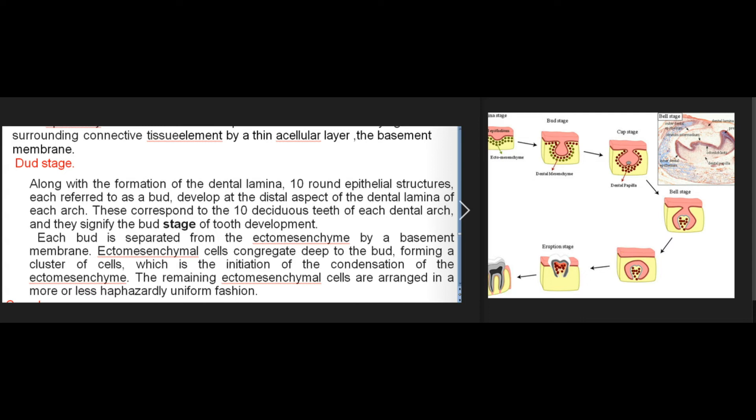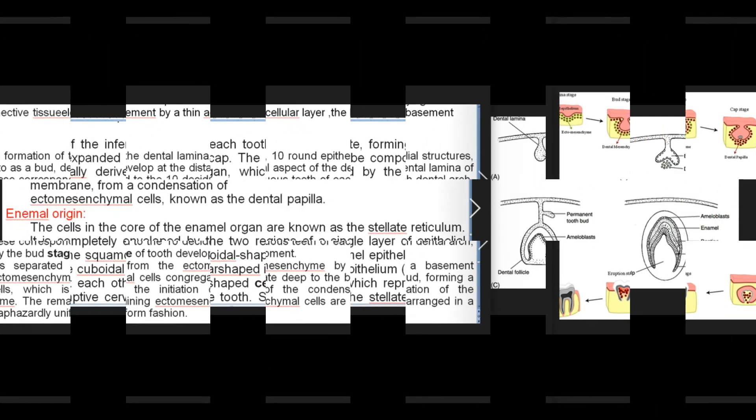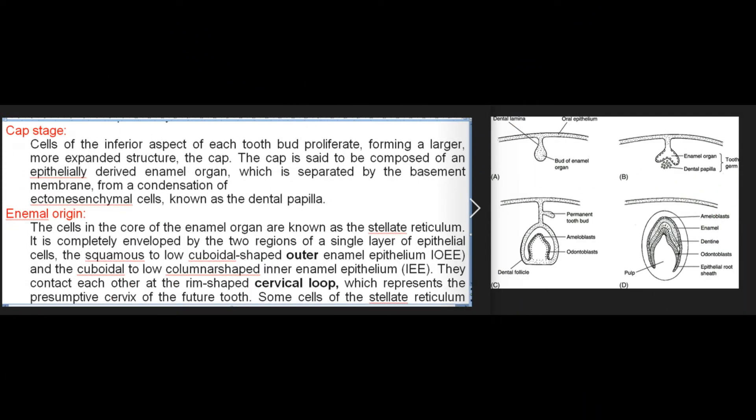Each bud is separated from the ectomesenchyme by a basement membrane. Ectomesenchymal cells congregate deep to the bud, forming a cluster of cells — the initiation of the condensation of the ectomesenchyme. In the cap stage, cells of the inferior aspect of each tooth bud proliferate, forming a larger more expanded structure, the cap. The cap is composed of an epithelially derived enamel organ, separated by the basement membrane from a condensation of ectomesenchymal cells known as the dental papilla.